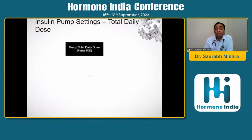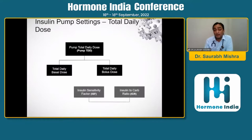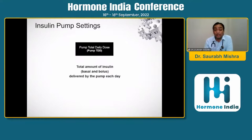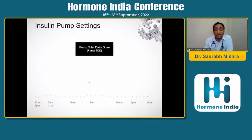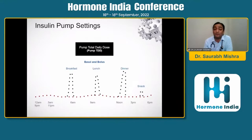To start with the pump total daily dose — it comprises total daily basal dose and total daily bolus dose. The bolus is calculated with the help of insulin sensitivity factor and insulin-to-carbohydrate ratio. The total daily dose of insulin required comprises both basal and bolus. Basal is the insulin secreted throughout the day, and for bolus we calculate based on carbohydrate content of breakfast, lunch, and dinner.